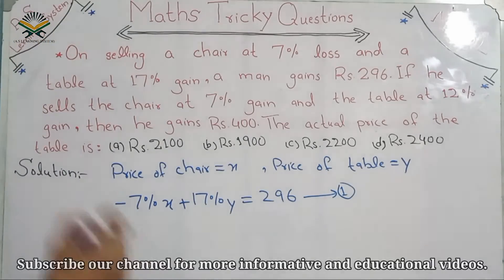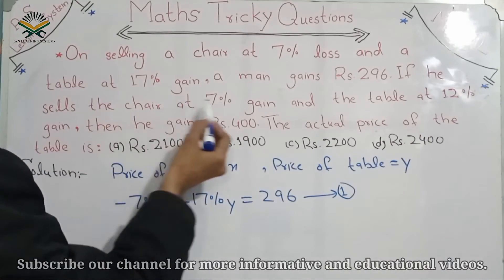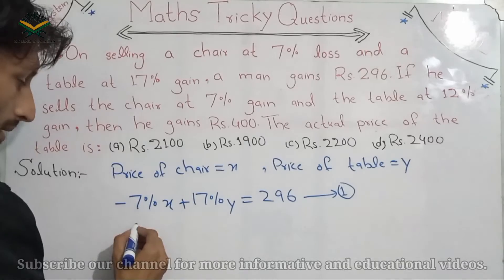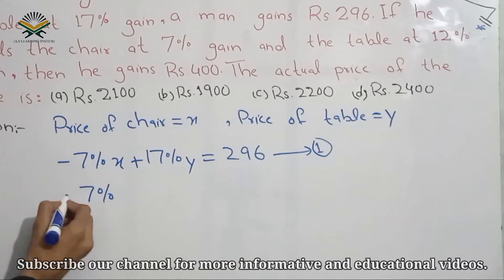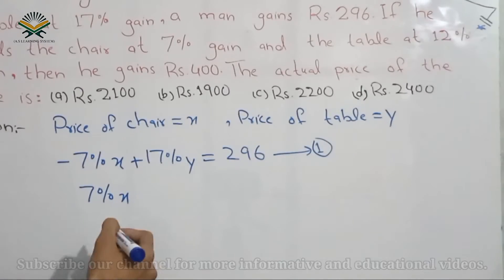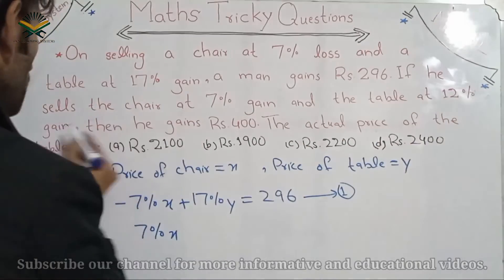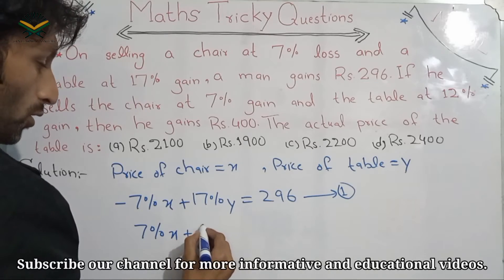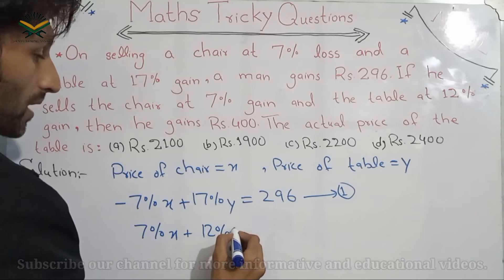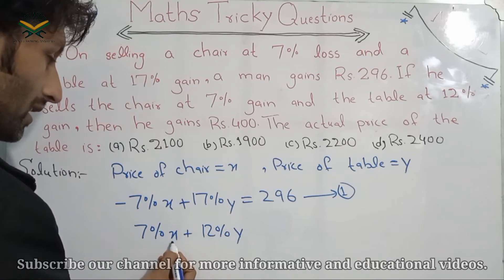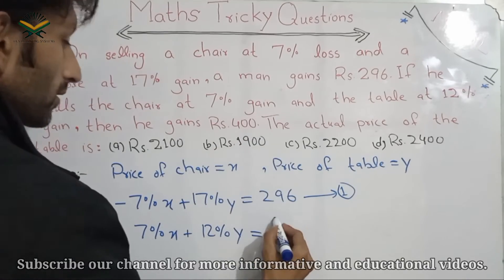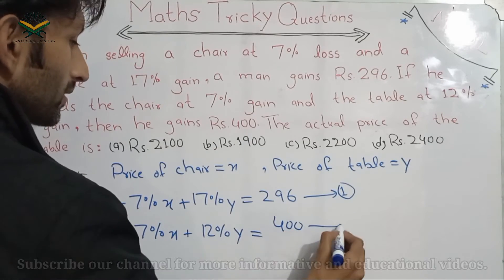For Equation 2: if he sells the chair at 7% gain, that gives plus 7% on x, and the table at 12% gain gives plus 12% on y. The total gain is Rs. 400. This is Equation 2.